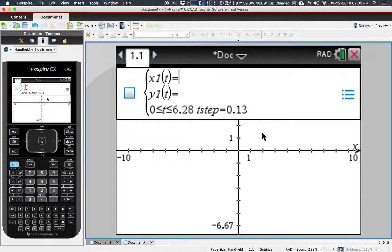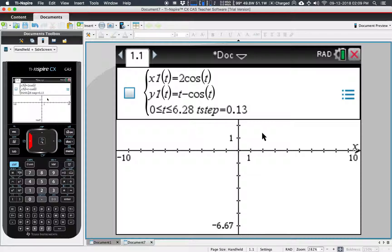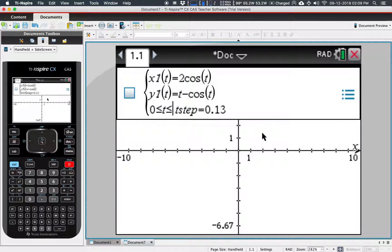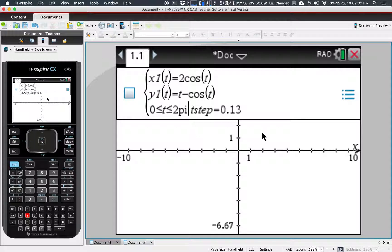Type in an equation: x1(t) = 2cos(t) and y1(t) = t - cos(t). Now 6.28, that's two pi already, but you can actually type it in as 2pi. It understands that pi means pi; you don't have to go all the way to the pi symbol every time you want it.